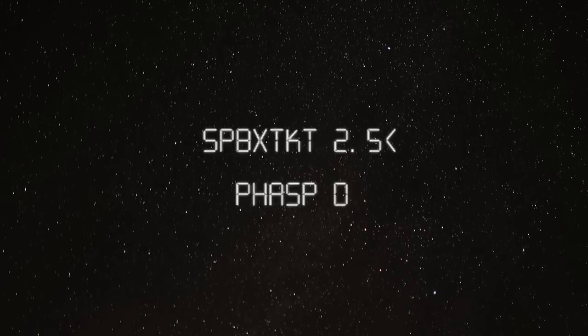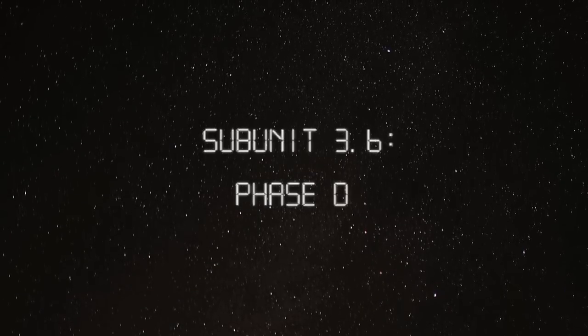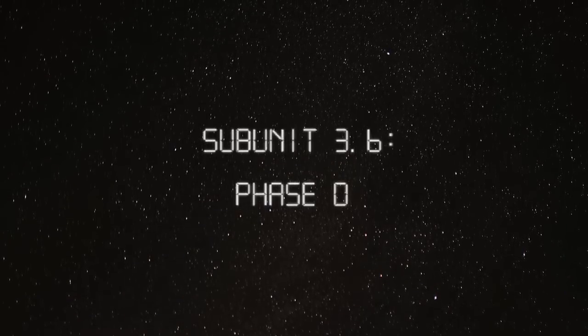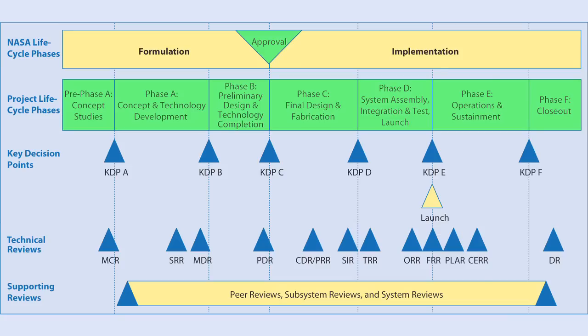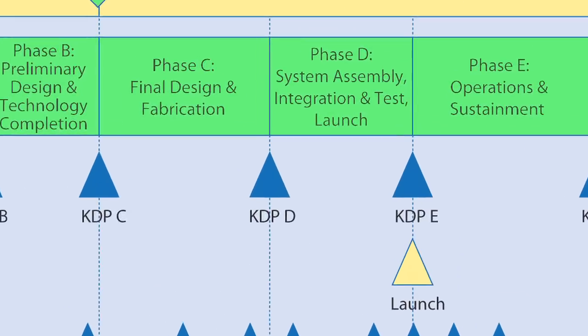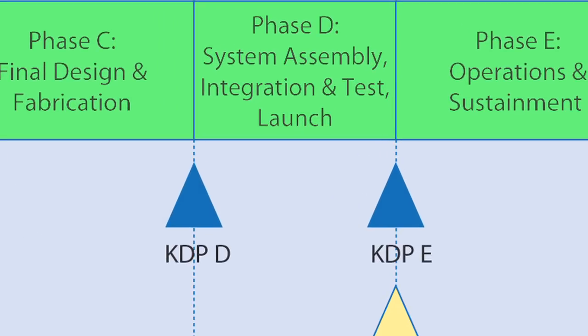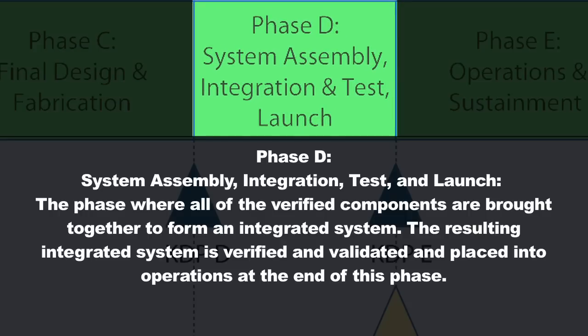Subunit 3.6, Phase D. Now, you've got all these components that you've purchased or built, and they've all been verified. Phase D is going to involve integrating all those components, creating a system out of them, testing the system, and preparing it for a launch.